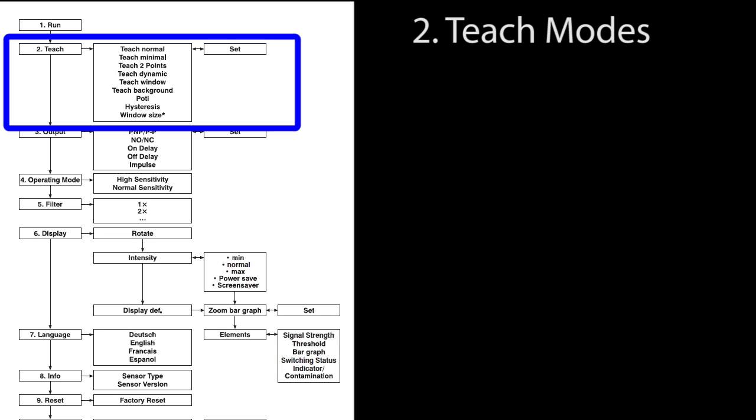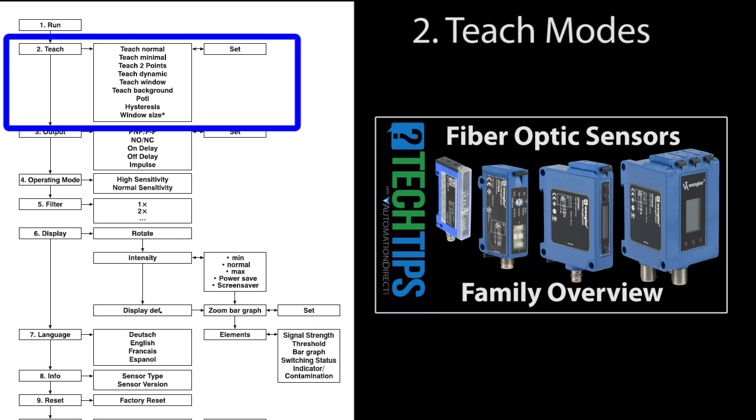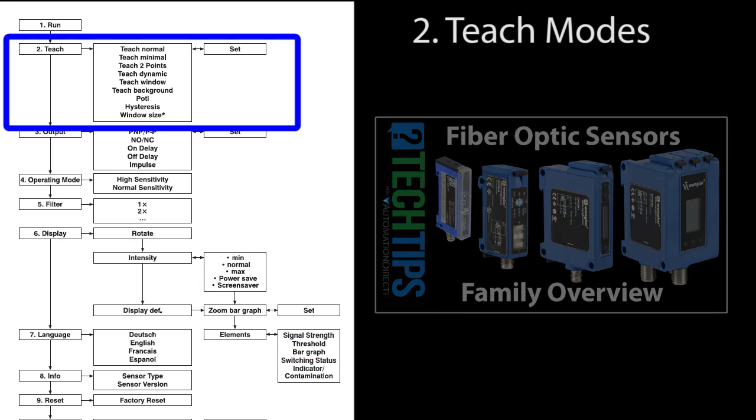This sensor has six teach modes to automatically set the correct sensing distance and a manual way to set the detection distance. There is a good explanation of what all these teach modes are in the family overview video, so we won't go into that here. We'll just walk through how to set each one up on this sensor.